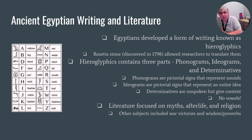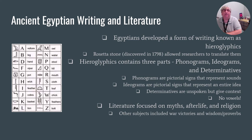Ancient Egyptian writing is very much focused on the idea of myth, religion, and afterlife. The Egyptians also liked to write about proverbs, war victories, and their everyday life.